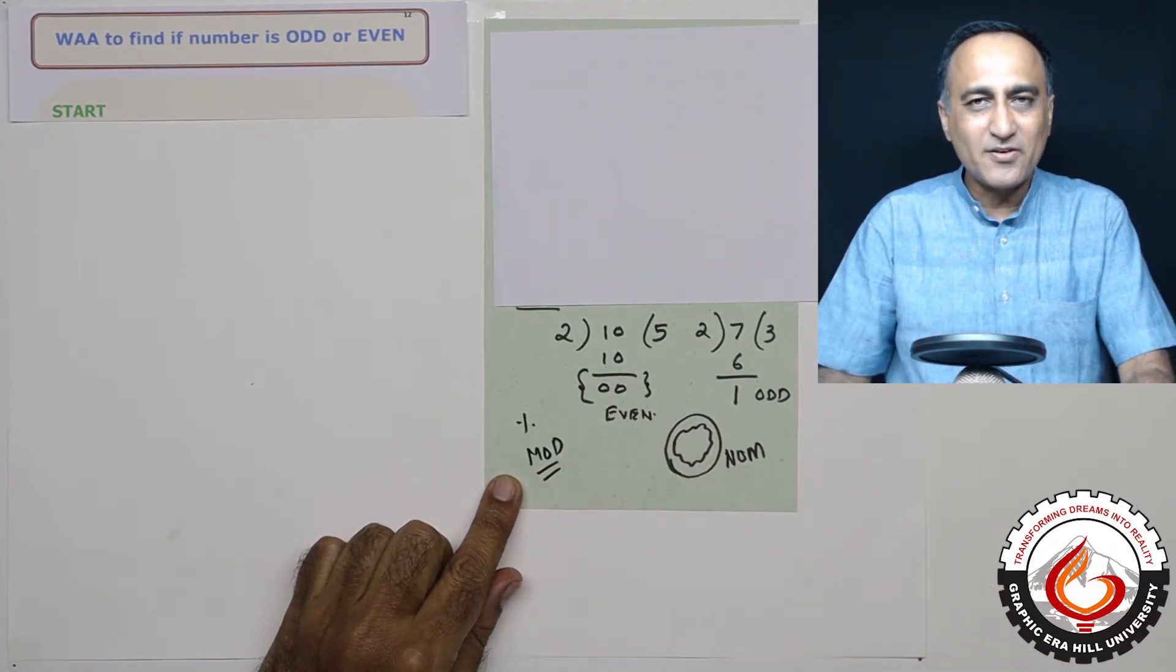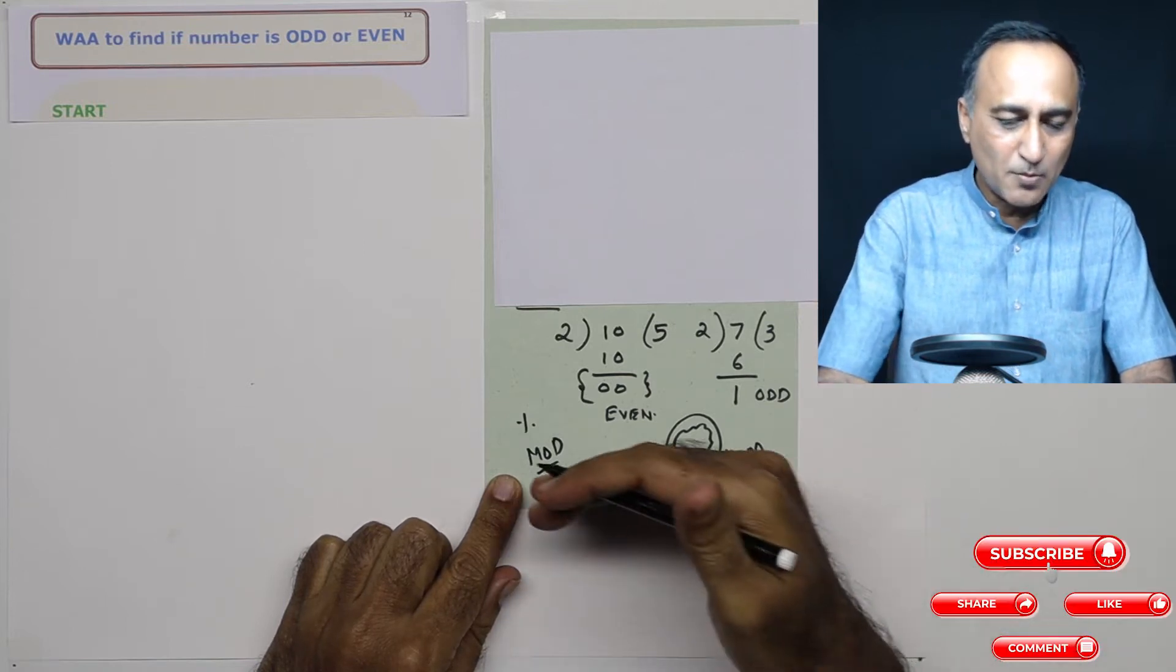So what mod does is given a number, if you divide it by some number, the remainder is given by the mod operation.